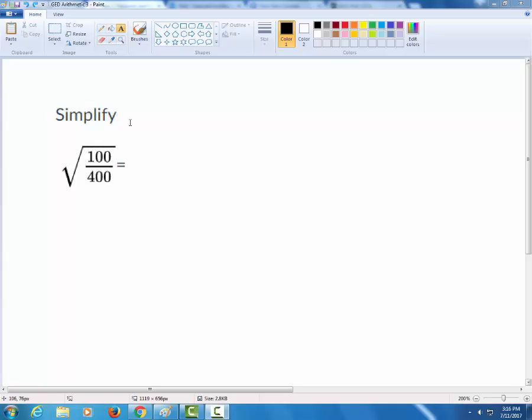It said simplify the square root, that's how you read that little check mark out, square root of 100 over 400.